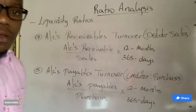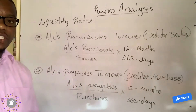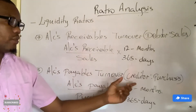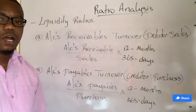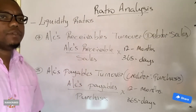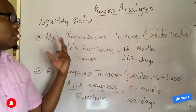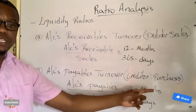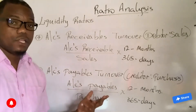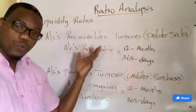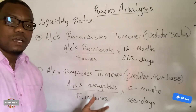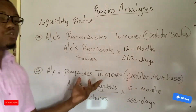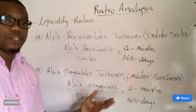The last two liquidity ratios are the accounts receivable turnover — also called the debtors to sales ratio — and the accounts payable turnover — also called the creditors to purchases ratio. The accounts receivable ratio tells you how quickly your debtors repay their debt, and the accounts payable ratio tells you how quickly you pay your creditors. You want your debtors to repay you quickly, and you also want to be able to repay your creditors.